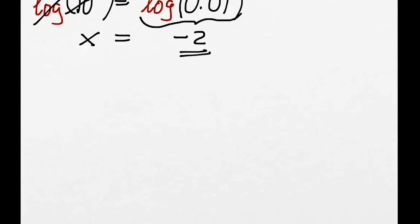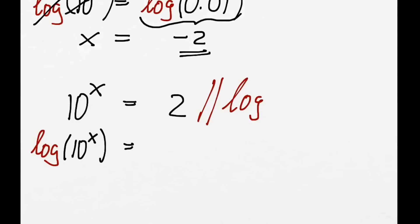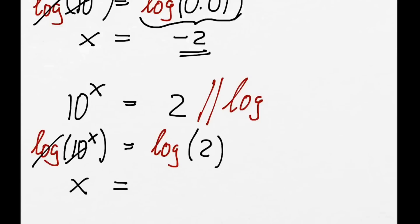The next question: 10 to the power of x equals 2. Again, it is the same old story — we need to get rid of the '10 to the power of'. So we take both sides log and we get log(10^x) equals log(2). Log cancels out. We've got x equals log(2), and for this I need to get my calculator out.